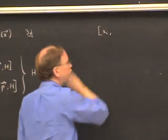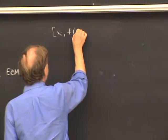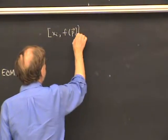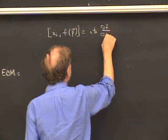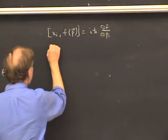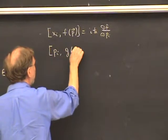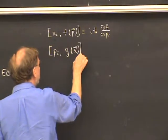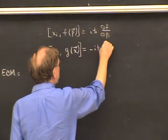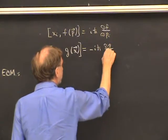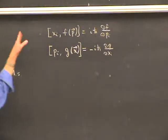To evaluate these commutators, there are some results that are useful. If we take the commutator of one component of position with some function of momentum f(p), the result is i h-bar times the derivative of f with respect to p_i. Likewise, if we take the commutator of one component of momentum with a function g of position, the answer is minus i h-bar times the partial of g with respect to x_i.